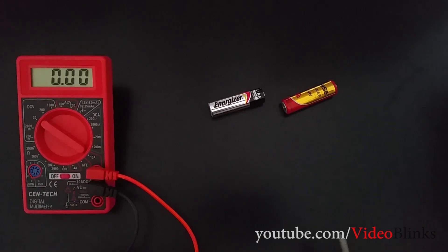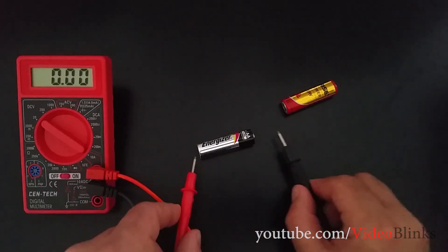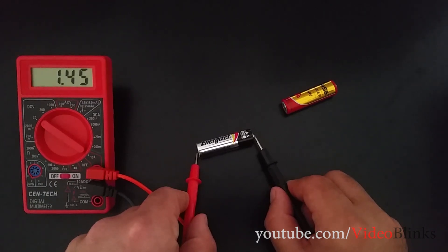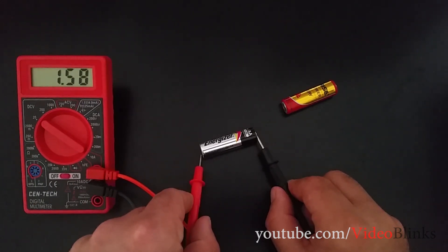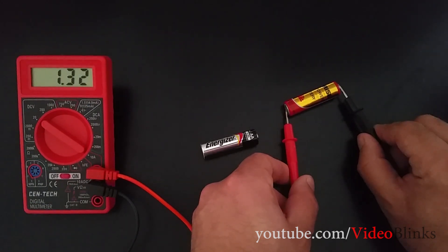Let's check that with the meter just to make sure that's correct, that this battery is full and this one is empty. Okay, this one is showing 1.59. This one is showing 1.32.